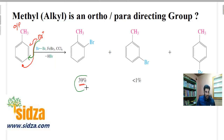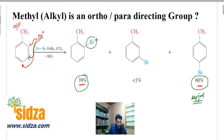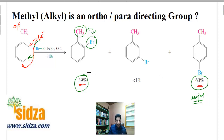Looking at the percentage difference: ortho is about 39% and para is about 60%. So para is the major product. Why is para the major product rather than ortho? Because in the ortho case, the two groups are very close and there is greater steric influence — more repulsion between the groups. When bromine attacks the para position, the repulsion is minimum and stability is maximum. That's why the para product is the major one. So when any electrophile attacks a benzene ring already attached with an alkyl group, it preferentially attacks ortho and para, and among those, para is the major product.